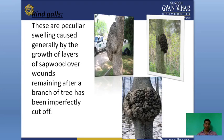The third type is rind galls — these are peculiar swellings caused generally by the growth of a layer of sapwood over a remaining stub after a branch of the tree has been imperfectly cut off. This is shown in the figure. You may have seen trees with such swellings on their outer surface — these are called rind galls and are also a type of defective timber.